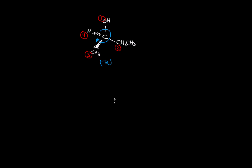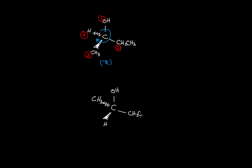Now what would happen if the hydrogen, which has the lowest priority, is not facing back? In this case I will take the same example but hydrogen will not be facing back. I have carbon with OH, and now I will put the hydrogen to the front, send the methyl to the back, and the ethyl will stay in the plane. The priorities remain the same: one, two, three, and four.